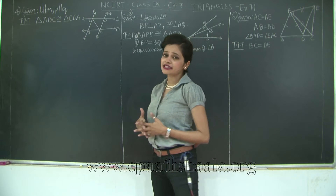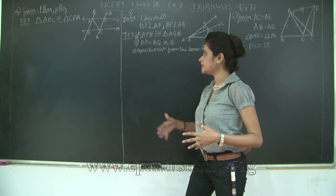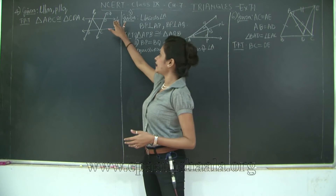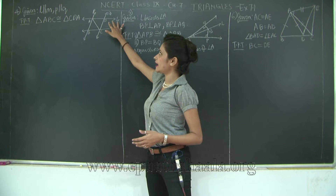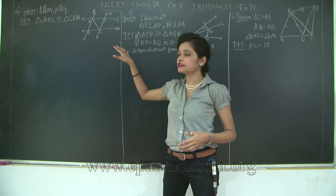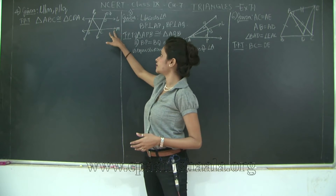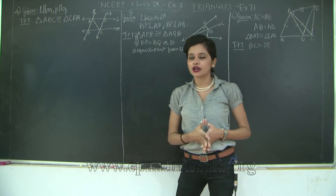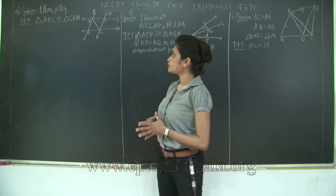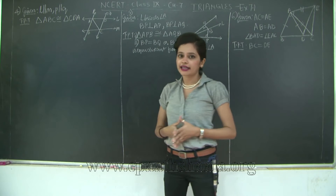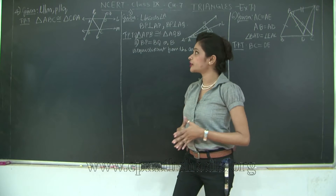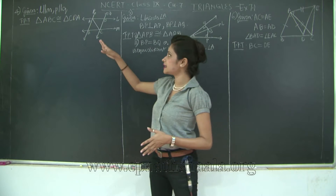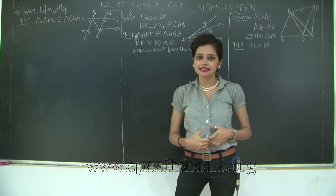Let's see what's the given data. You have LM — these two lines parallel to each other, and P and Q parallel to each other. You need to prove that two triangles are congruent. So which are the two triangles? ABC and CDA.